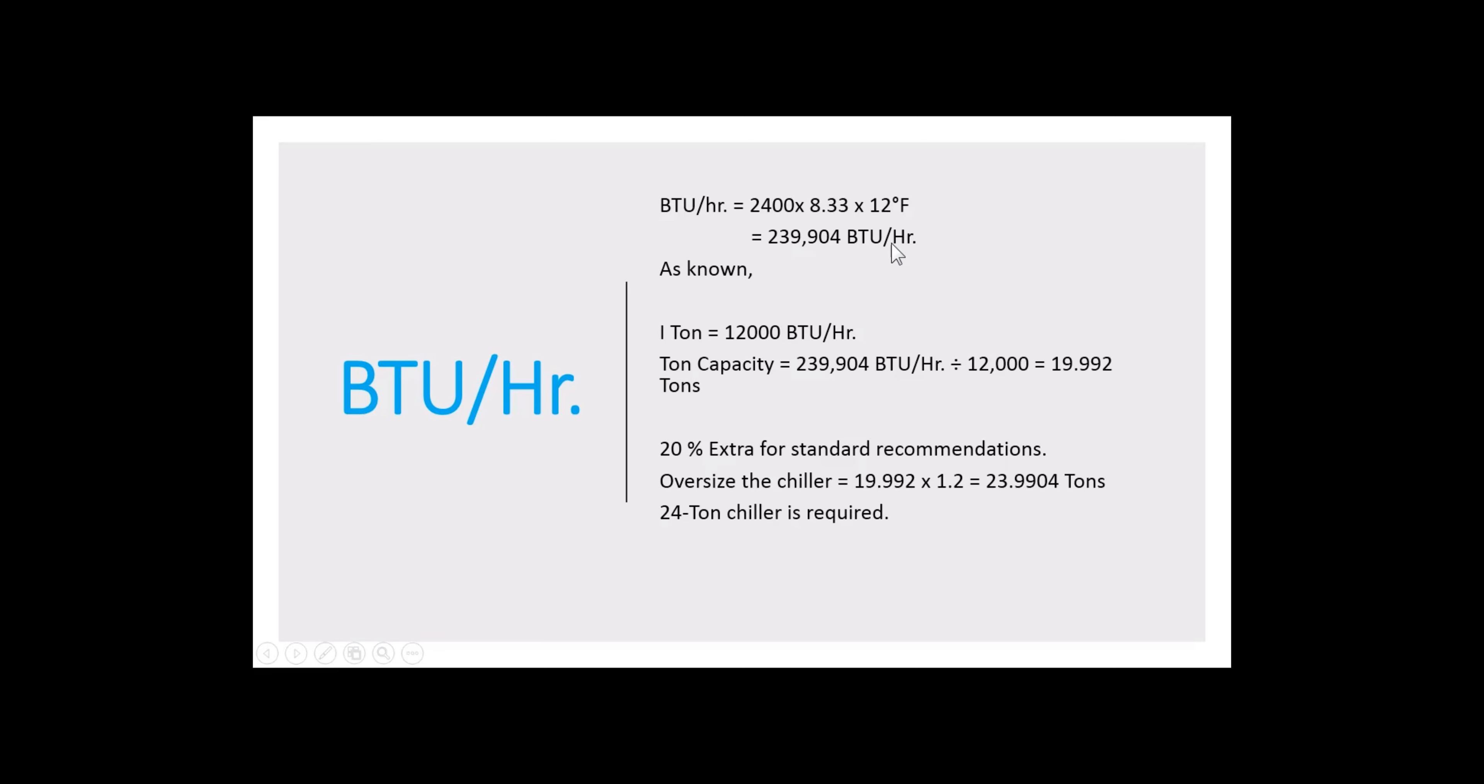As we know, one ton equals 12,000 British thermal units per hour. So, 239,904 BTU per hour divided by 12,000, you can get 19.9 tons.